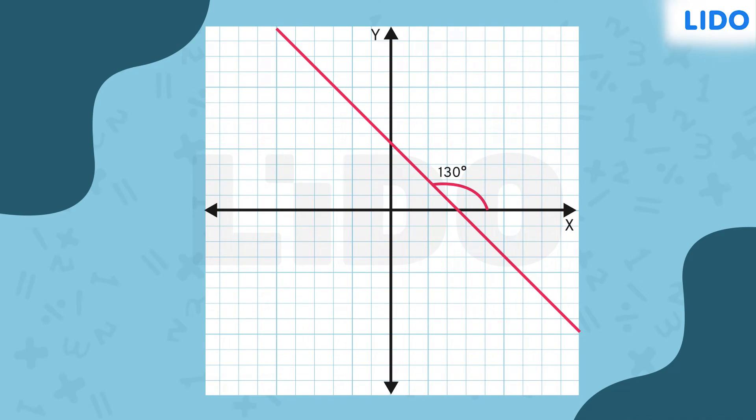Let's observe this graphically. The line makes an angle of 130 degrees with the x-axis. Graphically, the horizontal represents the x-axis. This angle can be measured in clockwise as well as anticlockwise direction with respect to the x-axis.